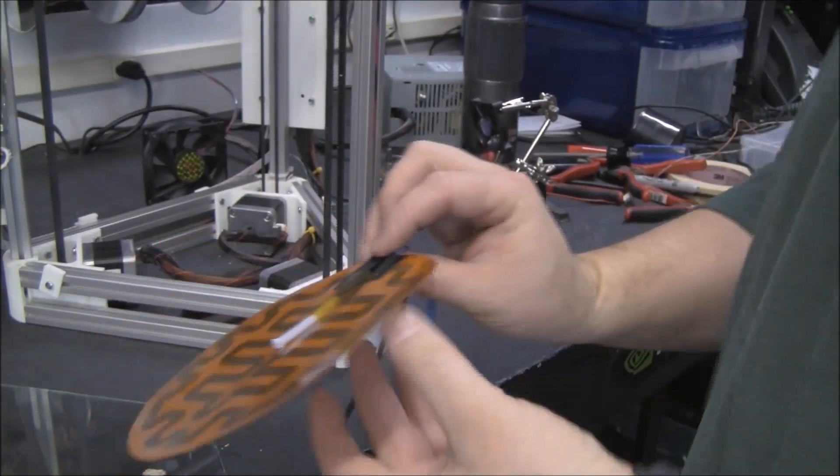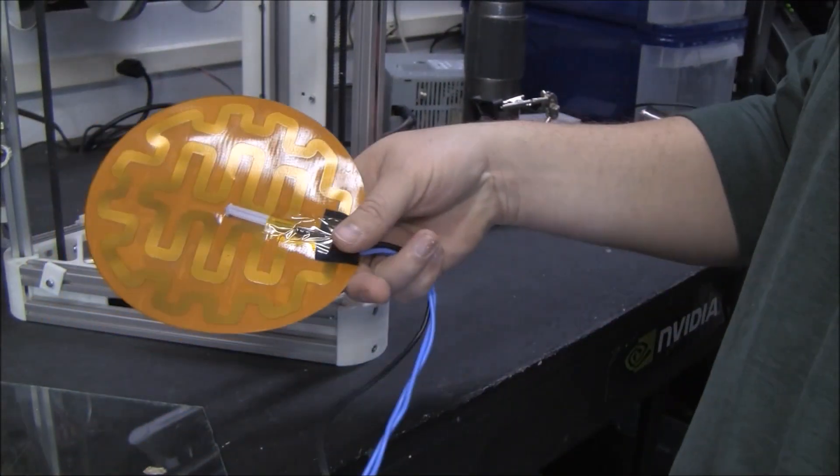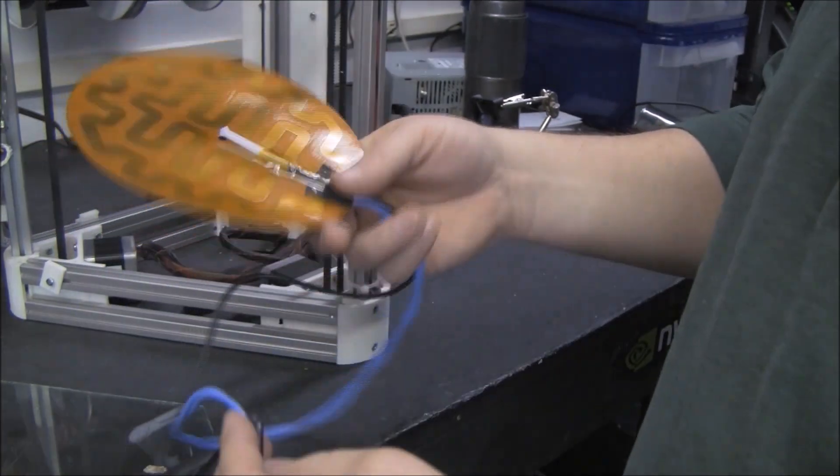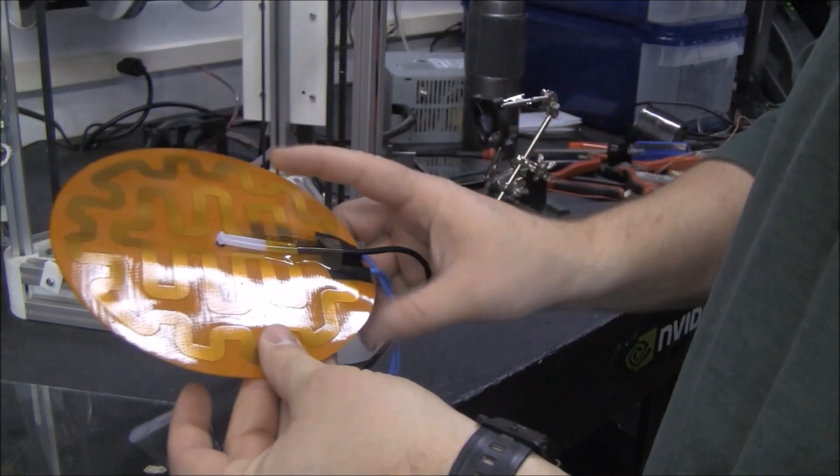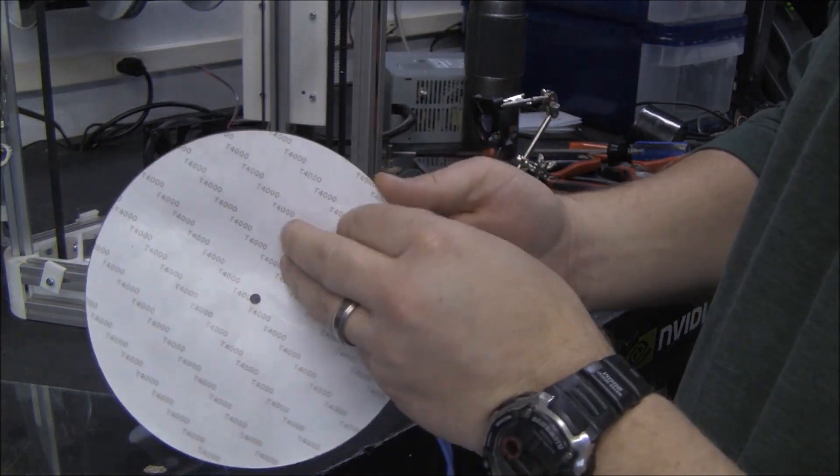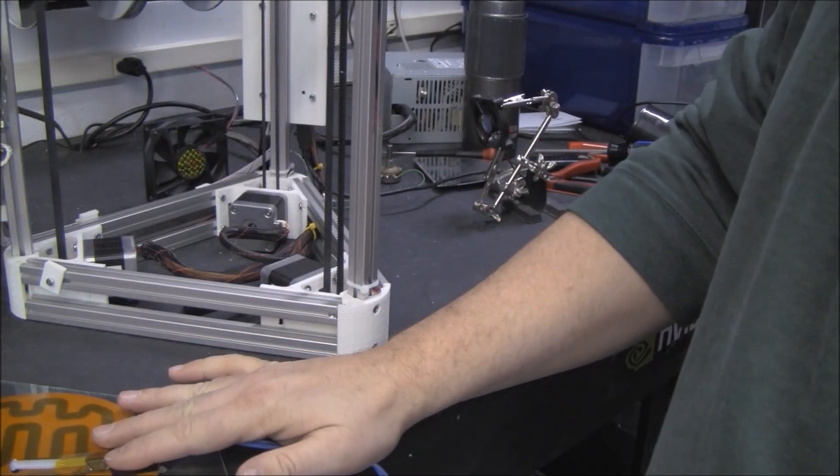So here's a heated bed I got for my Kossel Mini. It came from Trinity Labs. It's flexible and really thin, and it's got an adhesive on the back so you can stick it to your glass.